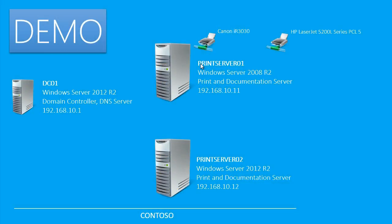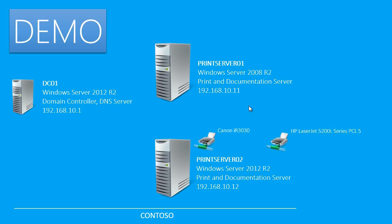This demo is a very basic setup. I have a domain controller DC01 and two print servers. Print Server 01 is running Windows Server 2008 R2 and has two network printers attached: Canon IR3030 and HP LaserJet 5200 L Series PCL5. I will be moving these printers to the new Print Server 02, which is running Windows Server 2012 R2. Both print servers are joined to the domain and all pre-checks for print drivers have been completed.